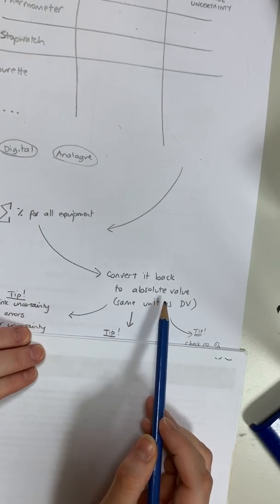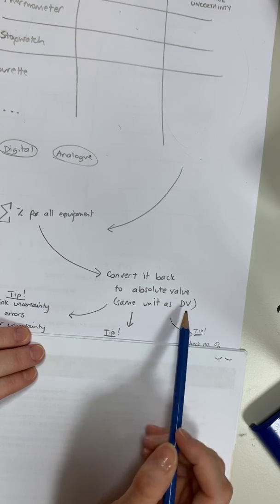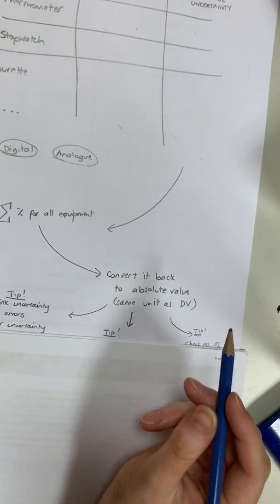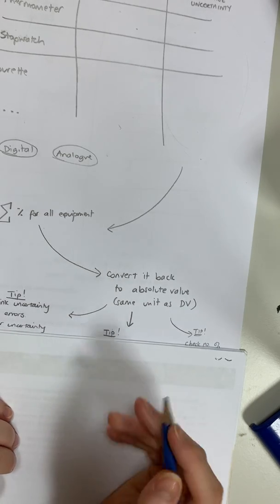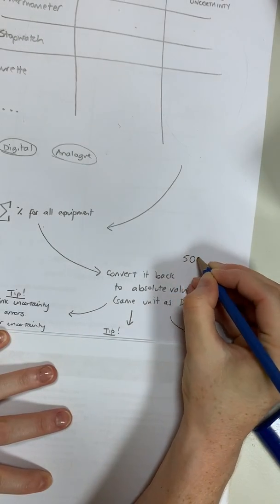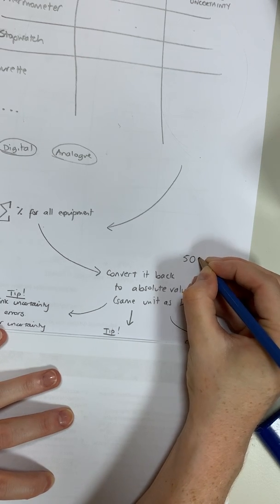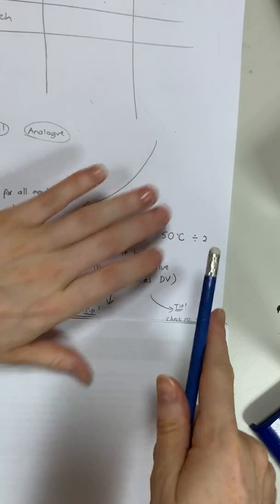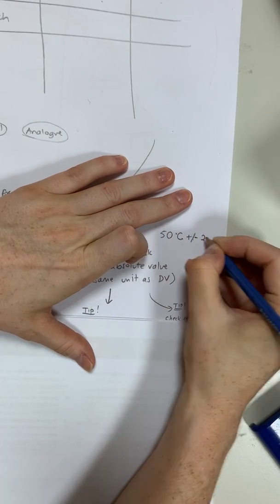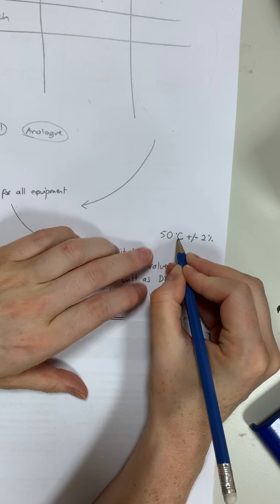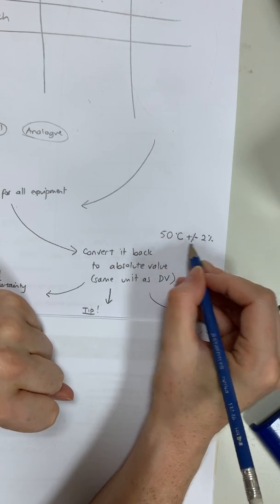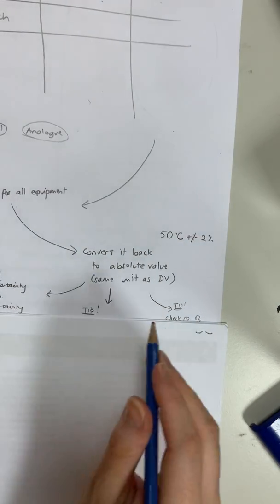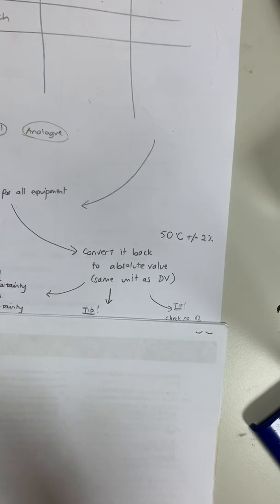Once you've done that, convert it back to an absolute value. So let's say, for example, you added all of them up and you realized you could be off by plus 2%. And your final value, let's say, hypothetically, you were measuring temperature and your average temperature or your final temperature that you measured was 50 degrees Celsius. Then you would say, okay, 50 degrees Celsius, I'm off by plus or minus 2%. So I'll convert that 2% back into a degree Celsius. And that's what becomes my final uncertainty for my value. So that helps me overall, this is the final value that I got. This is how much I could be wrong by.